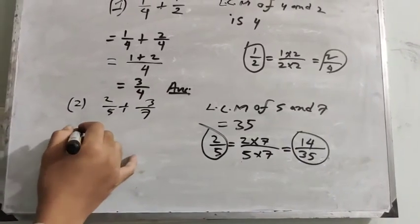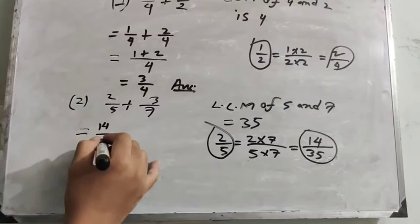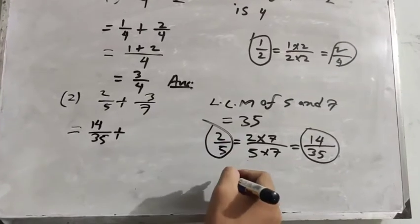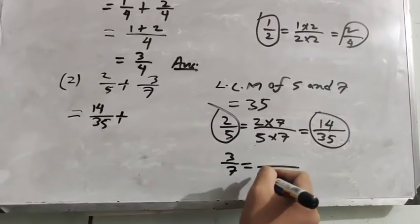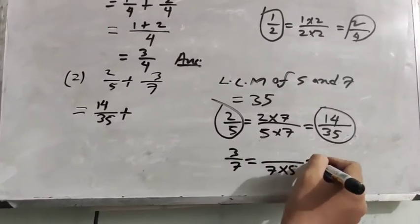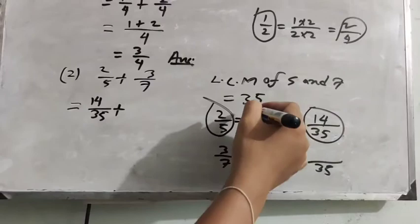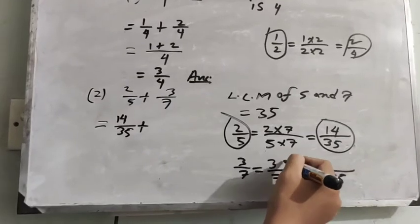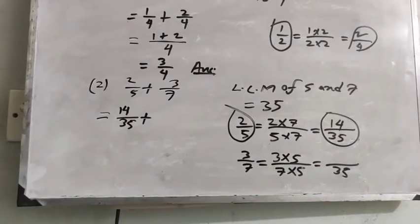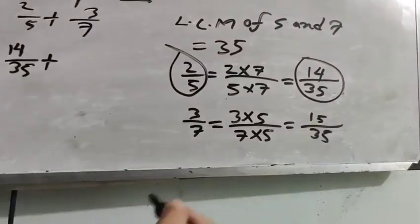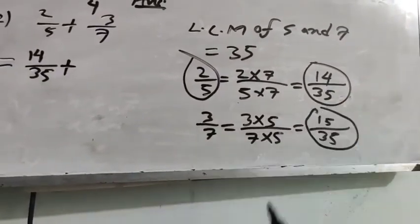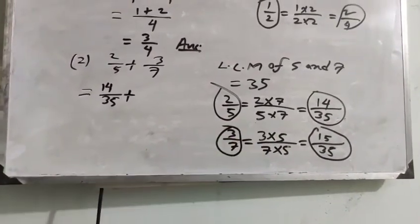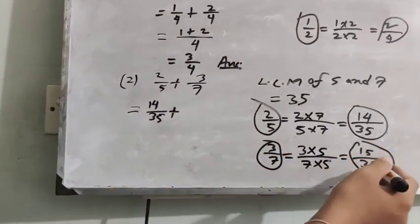We can write 14/35 plus the second fraction 3/7. For 3/7: the denominator 7 multiplied by 5 equals 35 because 35 is the least common multiple of 5 and 7. And 3 multiplied by 5 equals 15. So 15/35 is the equivalent fraction of 3/7, meaning 3/7 equals 15/35.